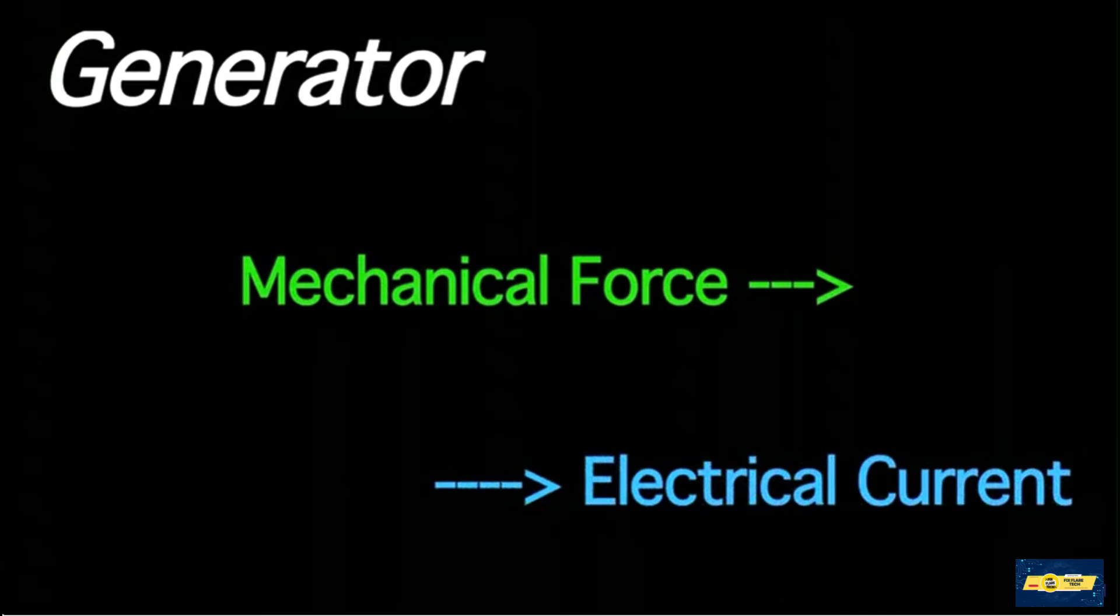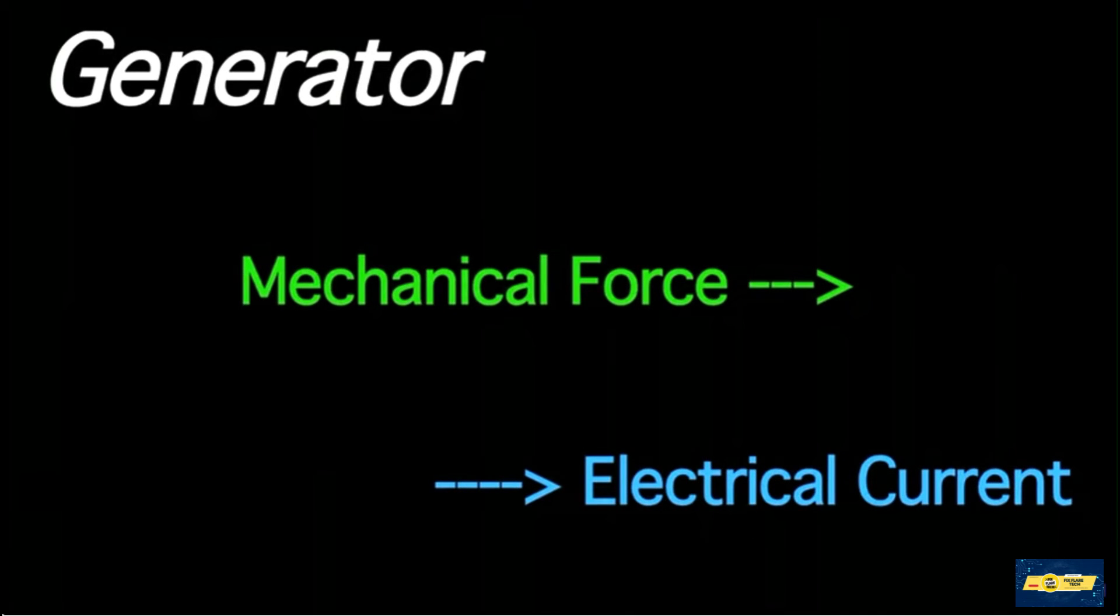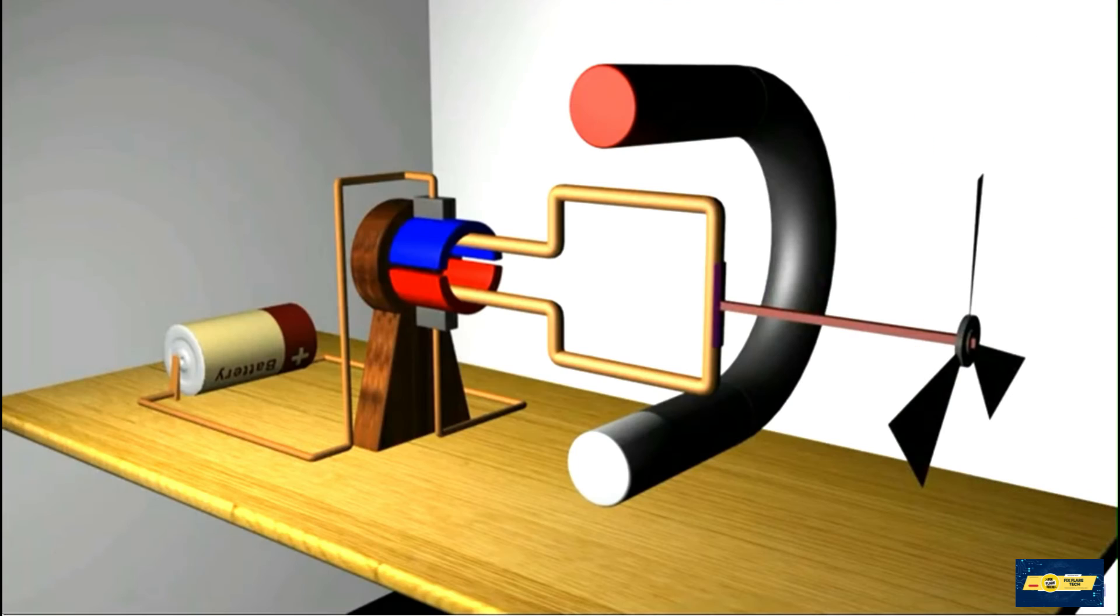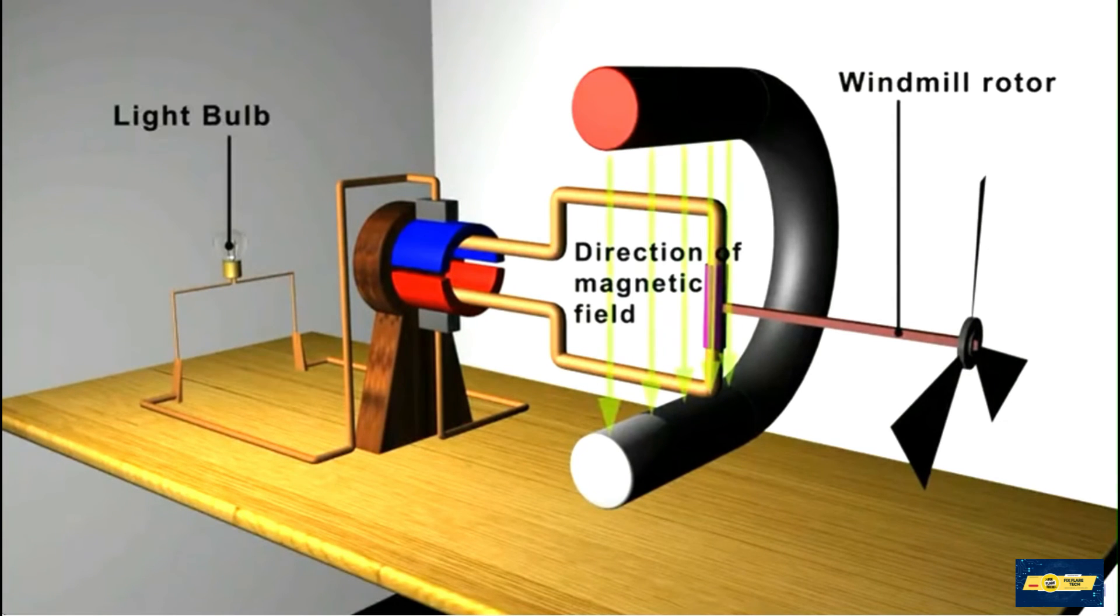So, as you can see, we can simply rearrange our motor into a generator. In this case, we will provide the mechanical force with a windmill rotor, attach to the loop, and connect a bulb in place of the battery.